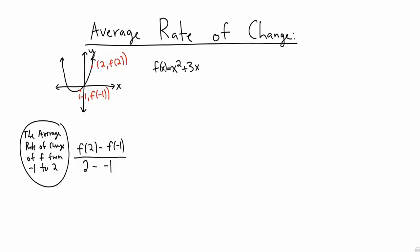Let's see why it's called that. What does this represent? Well, this represents the change, the change of f from minus 1 to 2. We can think of this as the change in y, the change in the outputs.